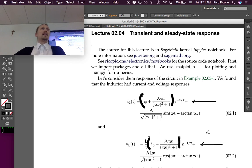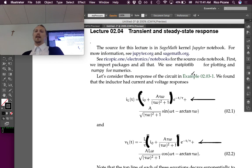The lecture is called transient and steady-state response, and it's trying to differentiate between these two regions or intervals in our response. You can find the source for this in a Jupyter notebook on the website, so you can download it.